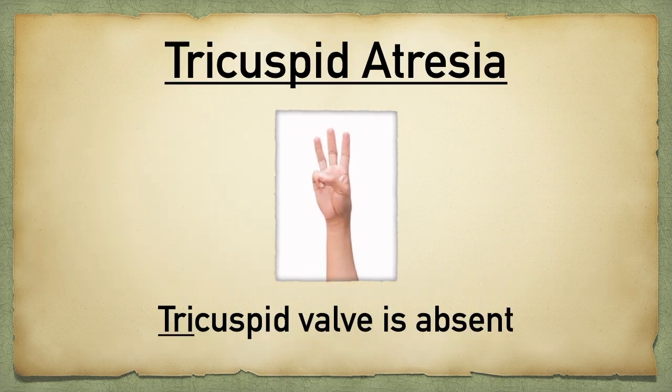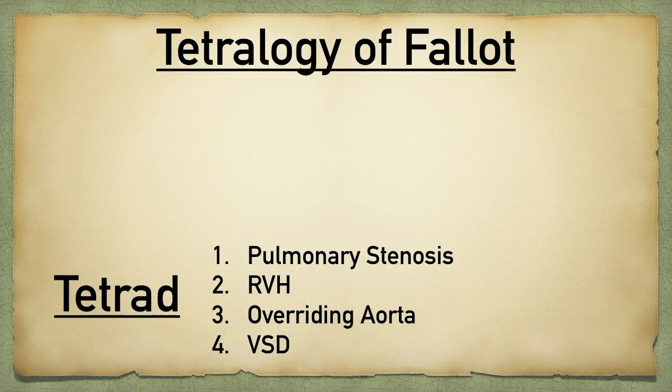Number three: tricuspid atresia. This is failure of formation of the tricuspid valve. The right ventricle is usually underdeveloped and there is usually a ventricular septal defect present, so blood from the right heart can mix with the left heart and go out to the rest of the body, leading to cyanosis.